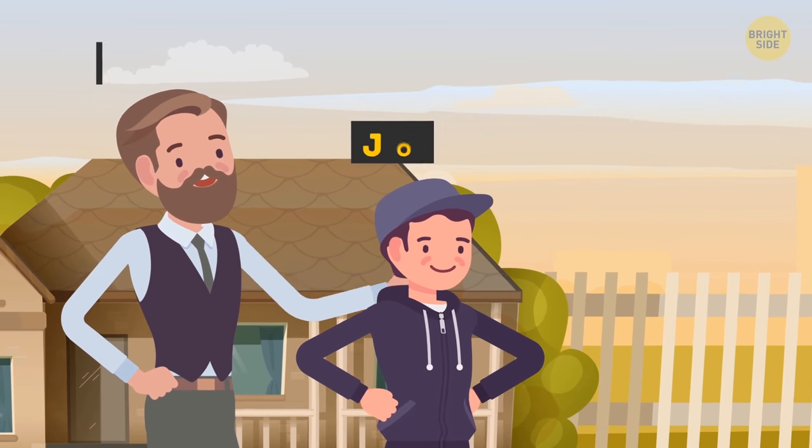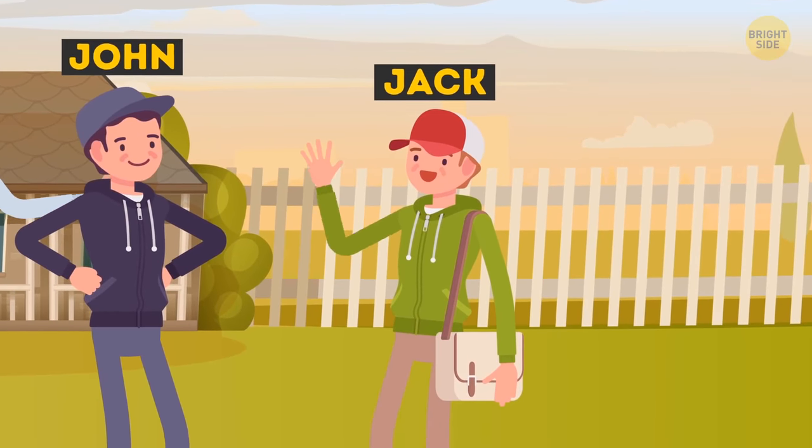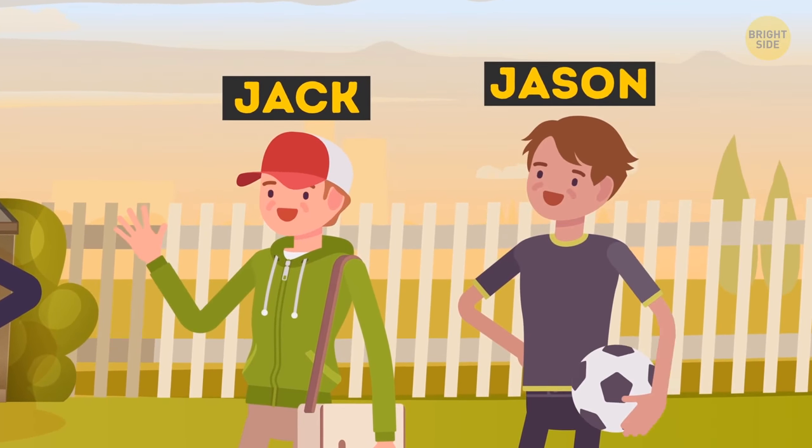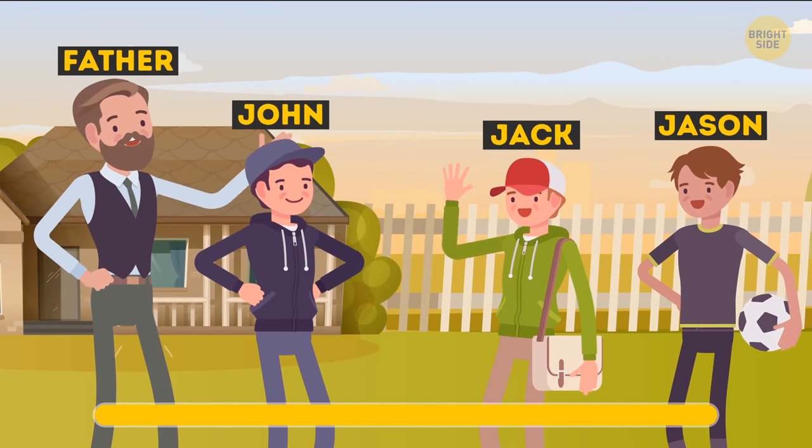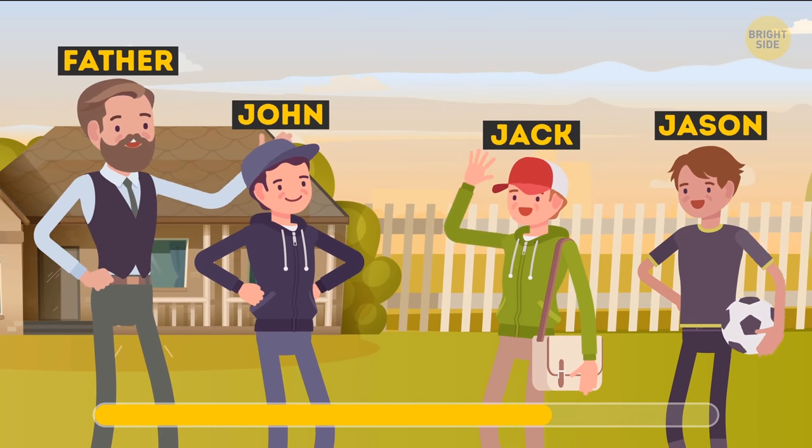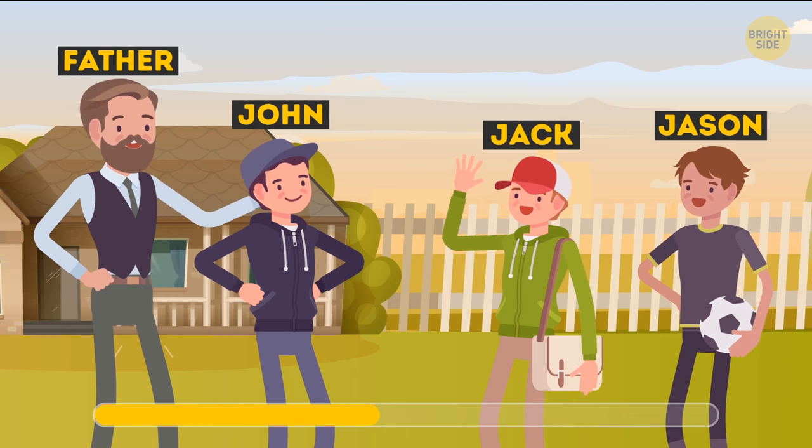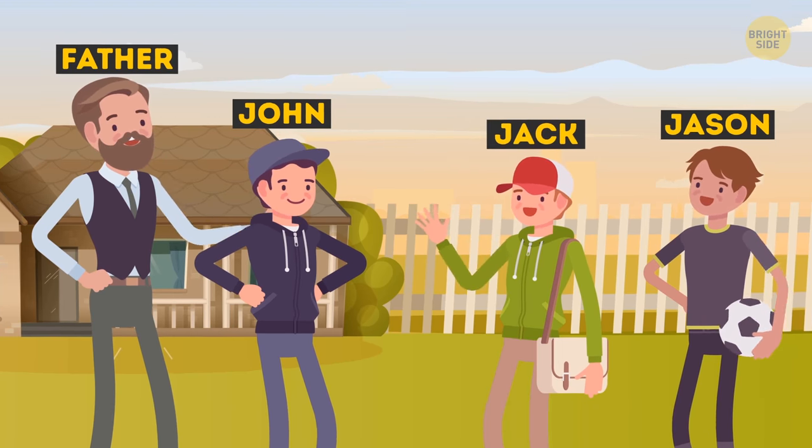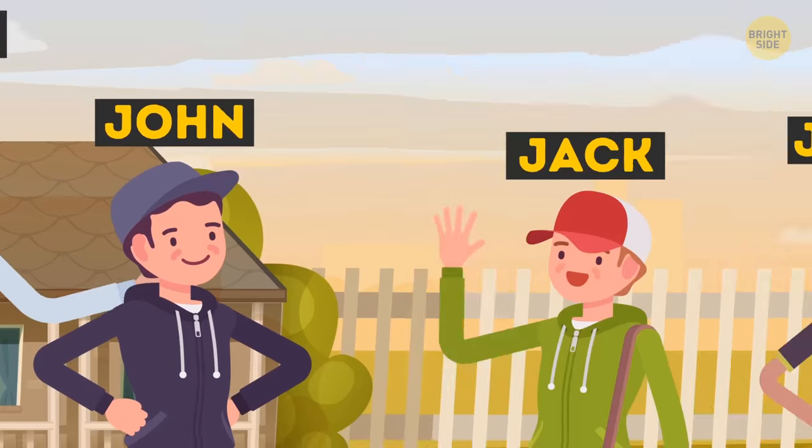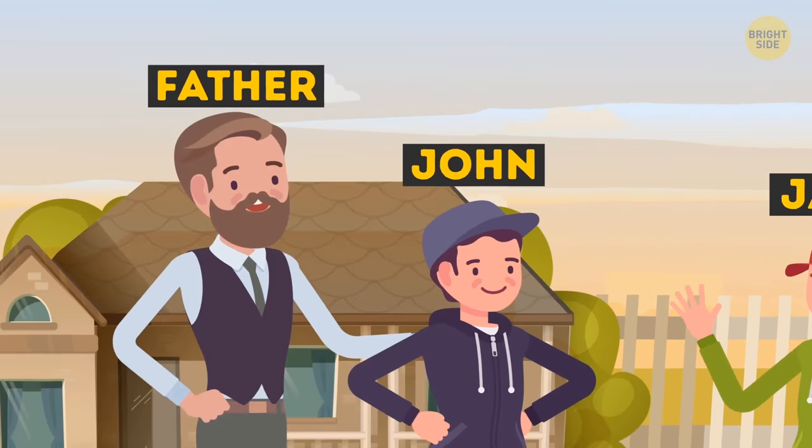John's father has three sons. There's Jack, a quiet, intelligent student. Then there's Jason, a popular athlete. So, who's the third son? It's John! His father has three sons. Jack, Jason, and him, John.